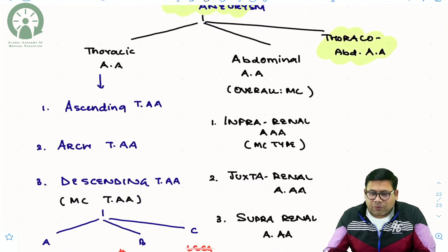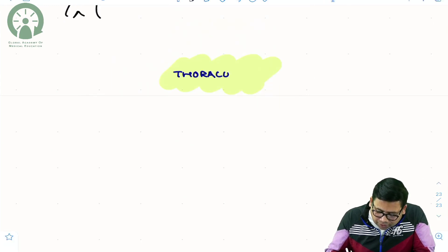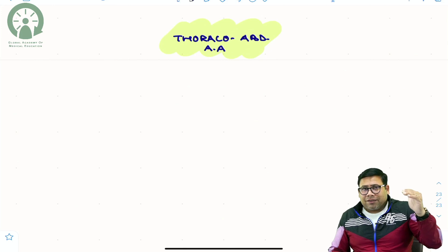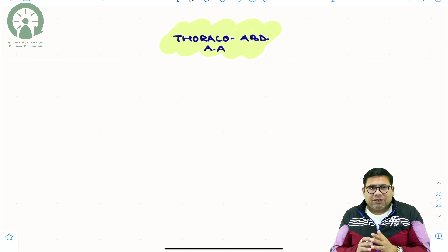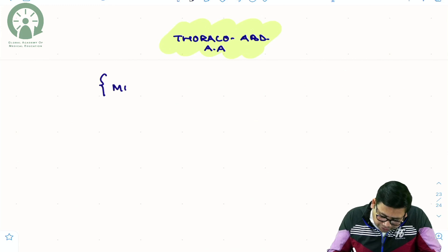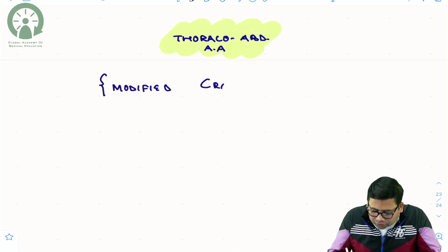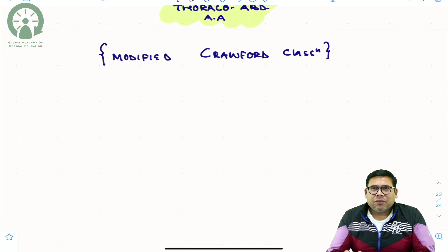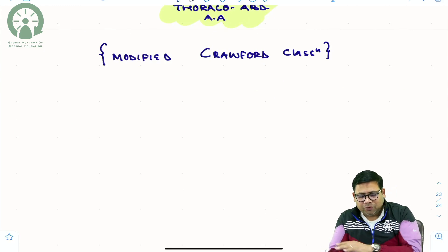The third category is the thoracoabdominal aneurysm. When you talk about thoracoabdominal Aortic Aneurysm, the challenge is that it extends from the thoracic Aorta right up to the abdominal Aorta. There is a classification for this called the Modified Crawford Classification, which has five types.